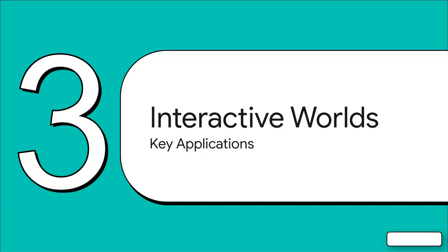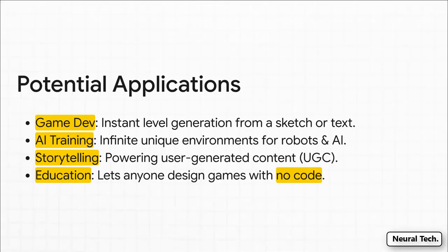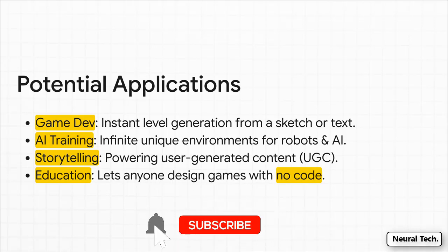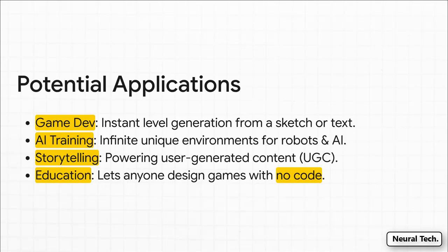The tech is seriously impressive, but what does it actually unlock for us? The real-world applications go way beyond a cool research project. You can split the potential into two big buckets. The first is for human creativity — imagine game designers creating a playable prototype from a single sketch, or a student building an interactive science lesson without writing a single line of code. The second bucket might be even bigger: this gives us a way to create infinite, unique training grounds for other AIs, like training robots or reinforcement learning agents in countless slightly different worlds to make them more robust. That's a game-changer.